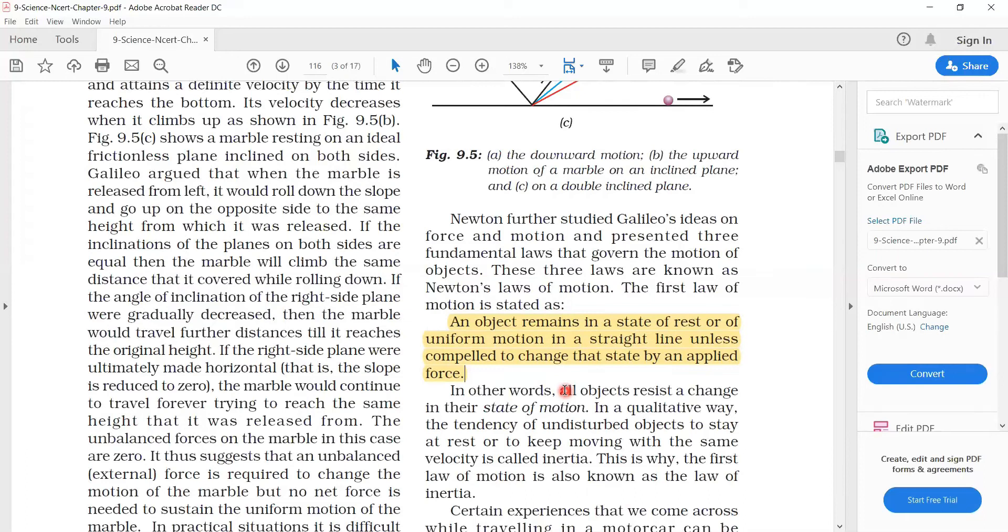Inertia of rest is the thing that when an object is in its position or rest, it will remain at rest due to its mass. If you have books on the table, the books will remain on the table unless or until we move that thing. Books remain as they are.